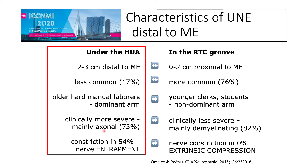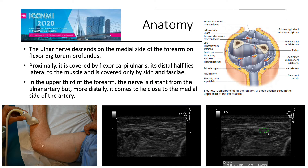The ulnar nerve then descends on the medial side of the forearm on the flexor digitorum profundus. Proximally it is covered by the flexor carpi ulnaris; its distal half lies lateral to the muscle, covered only by skin and fascia. In the upper third of the forearm the nerve is distant from the ulnar artery, but more distally it lies close to the medial side of the artery. This is the position in the mid forearm — here is the ulnar nerve and the ulnar artery just beside it.